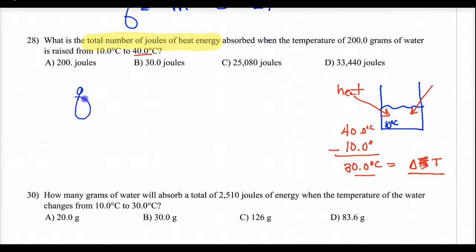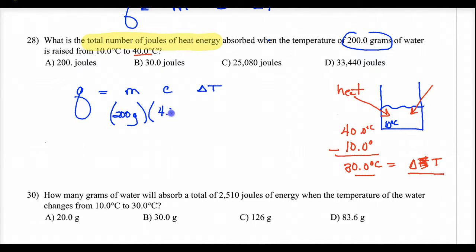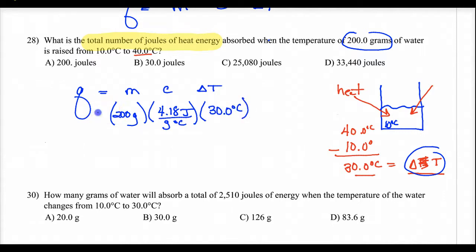Back to our thermal equation: Q equals MC delta-T, always of the same substance — in this case, water. Let's plug in: 200 grams of water. Specific heat, because it's water, is 4.18 joules per gram per degree Celsius. Change in temperature is 30.0 degrees Celsius. Grams over grams cancels, Celsius over Celsius cancels. Multiplying 200 times 4.18 times 30.0 gives me 25,080 joules.